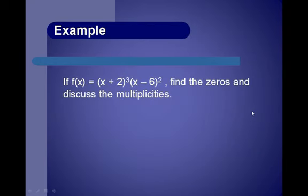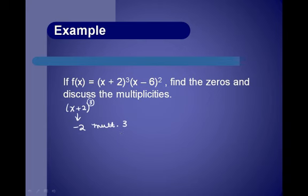Let's do an example on multiplicities. If f of x equals x plus 2 to the third times x minus 6 squared, find the zeros and discuss the multiplicities. If the factor is x plus 2, the zero is negative 2. With a power of 3, we say the multiplicity is 3. The second factor, x minus 6, has a zero at 6. Because it occurred two times, 6 is a zero of multiplicity 2.